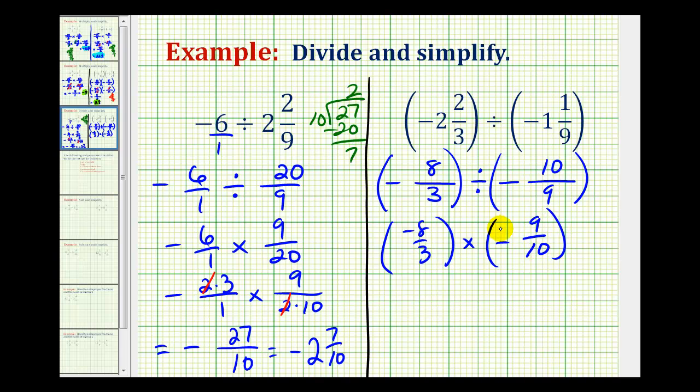So notice how we do have a common factor of three here, and a common factor of two here. Let's go ahead and show that. So we'll have negative two times four for eight. Three is prime. Nine is three times three, and ten is two times five. Notice how I didn't write out the prime factorization here, because I knew the only common factor was two. So two over two simplifies to one, and three over three simplifies to one.